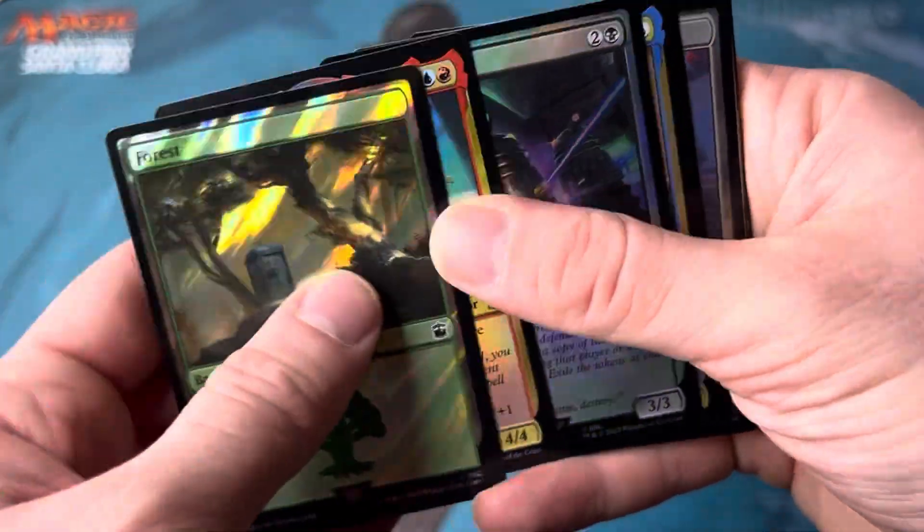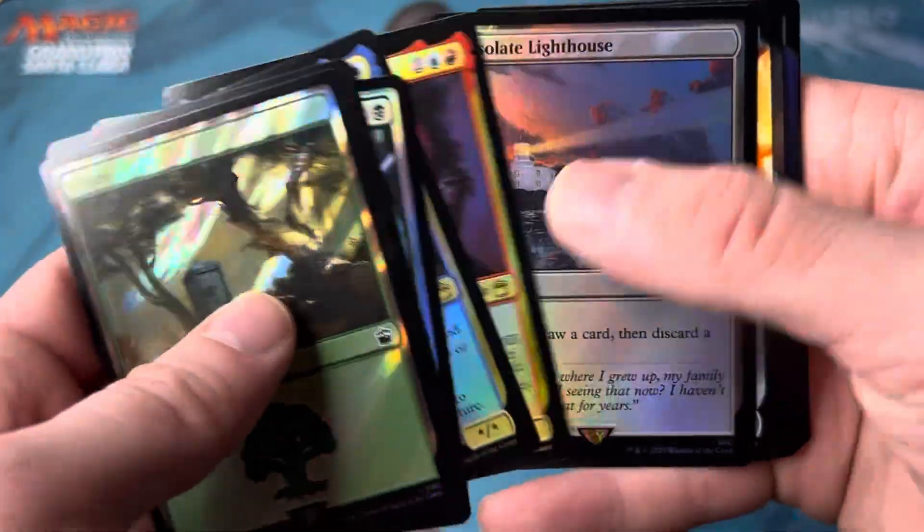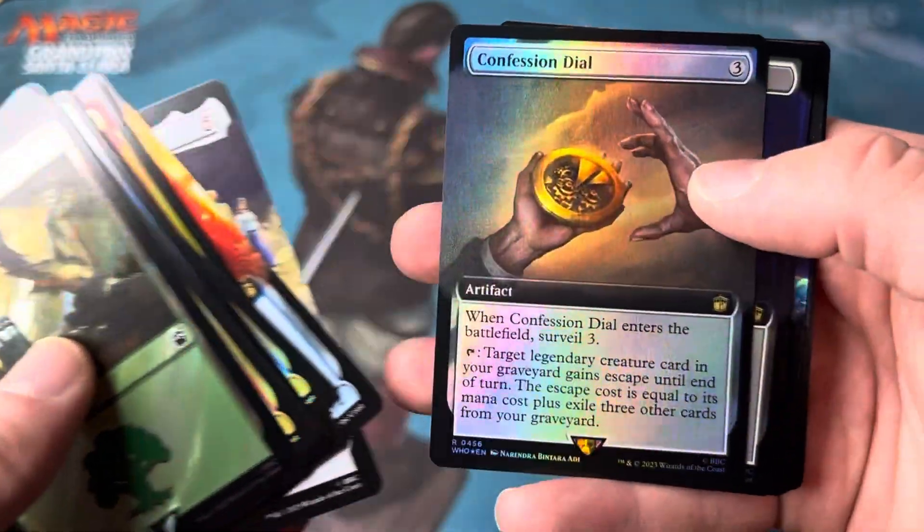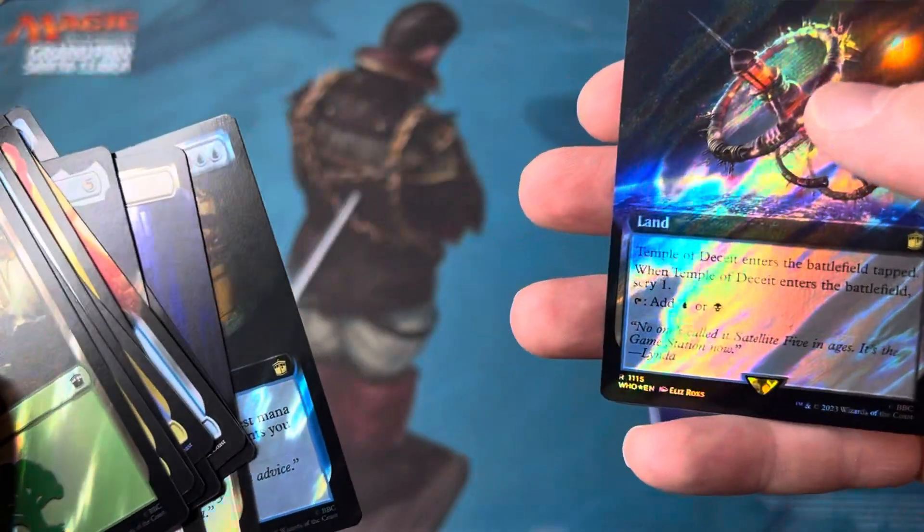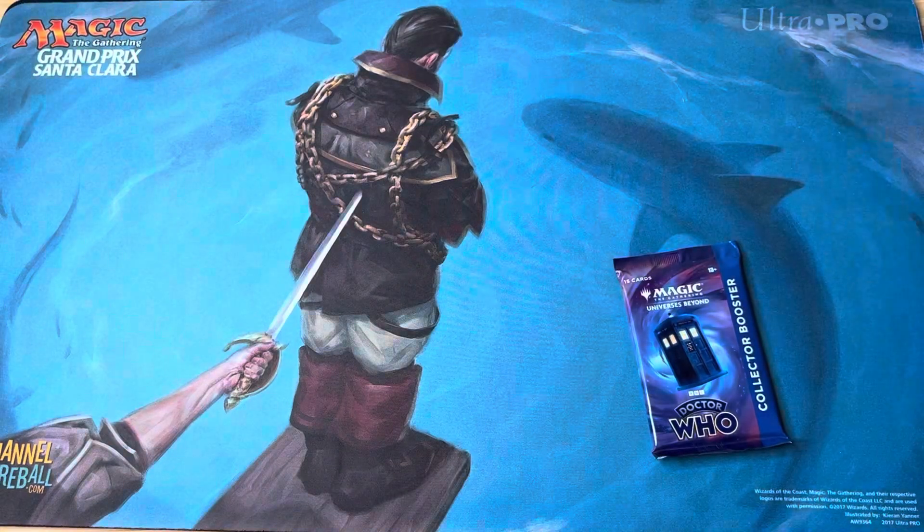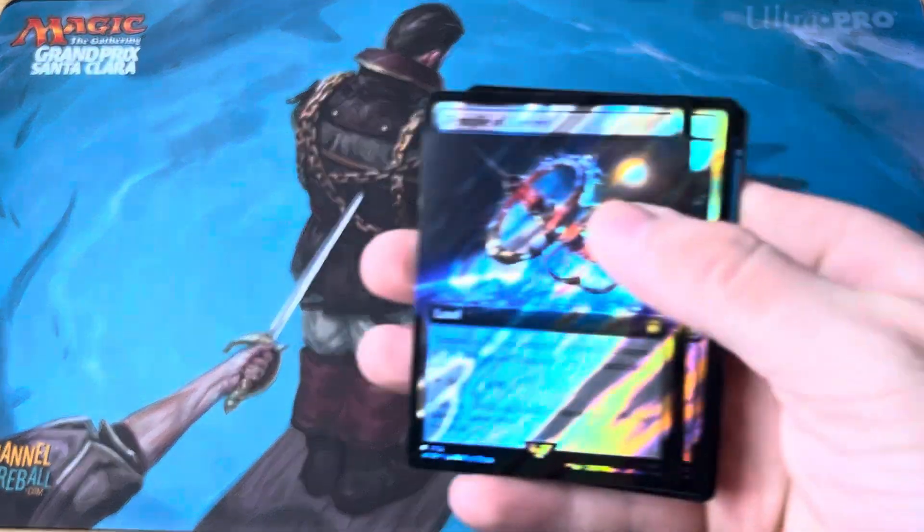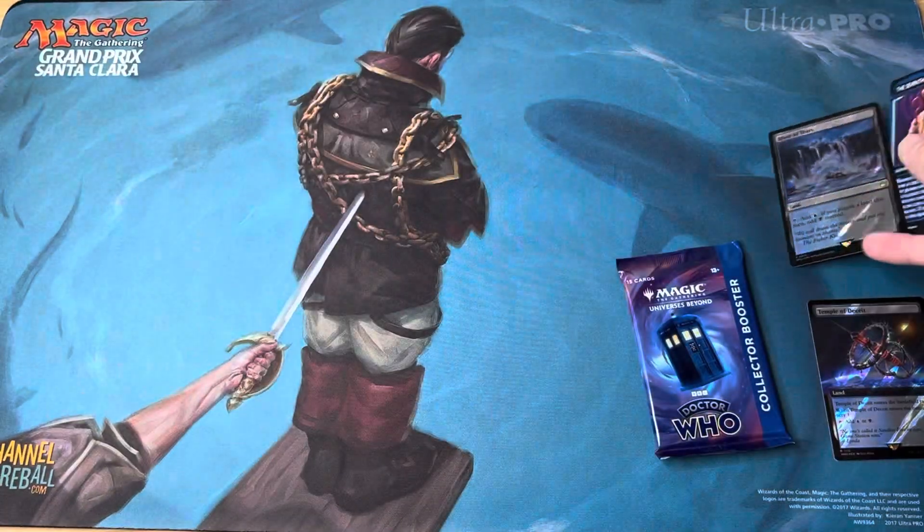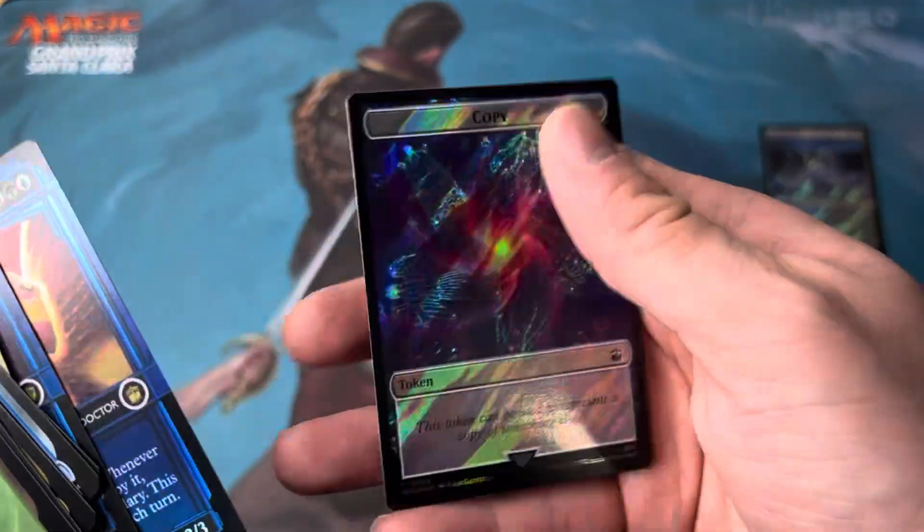12th Doctor. Fantastic. Dalek Squadron. Duggan. Idris. Lighthouse. Very cool. Podium. Confession. Sun Bay Canyon. Traverse. One second I'm gonna cough. I apologize. Oh. Temple of Deceit. I love that. River of Tears. Seventh Doctor. The Sixth Doctor. And a copy.